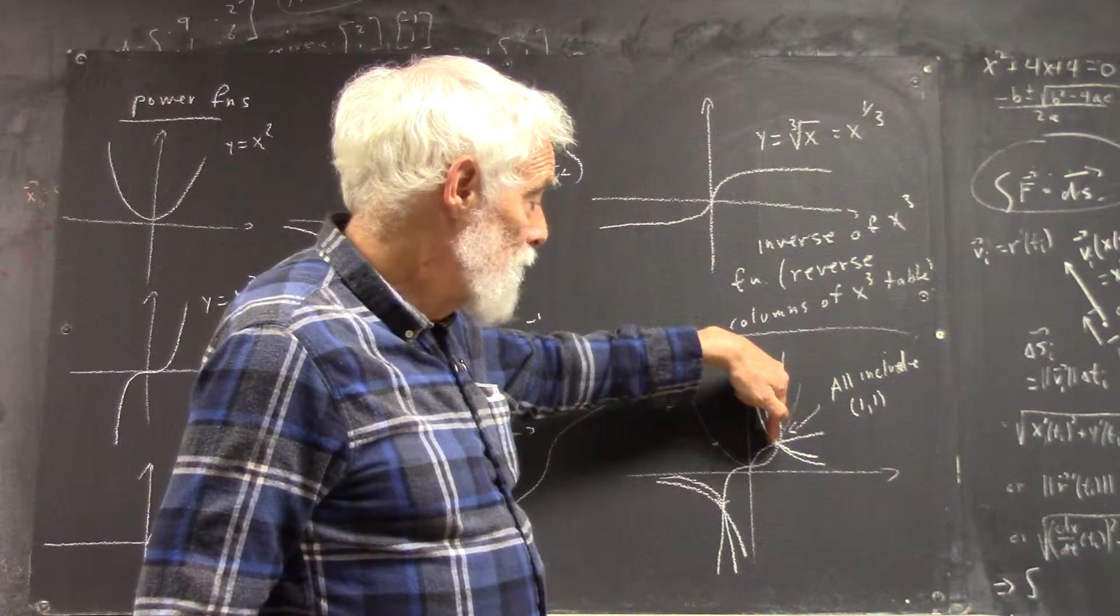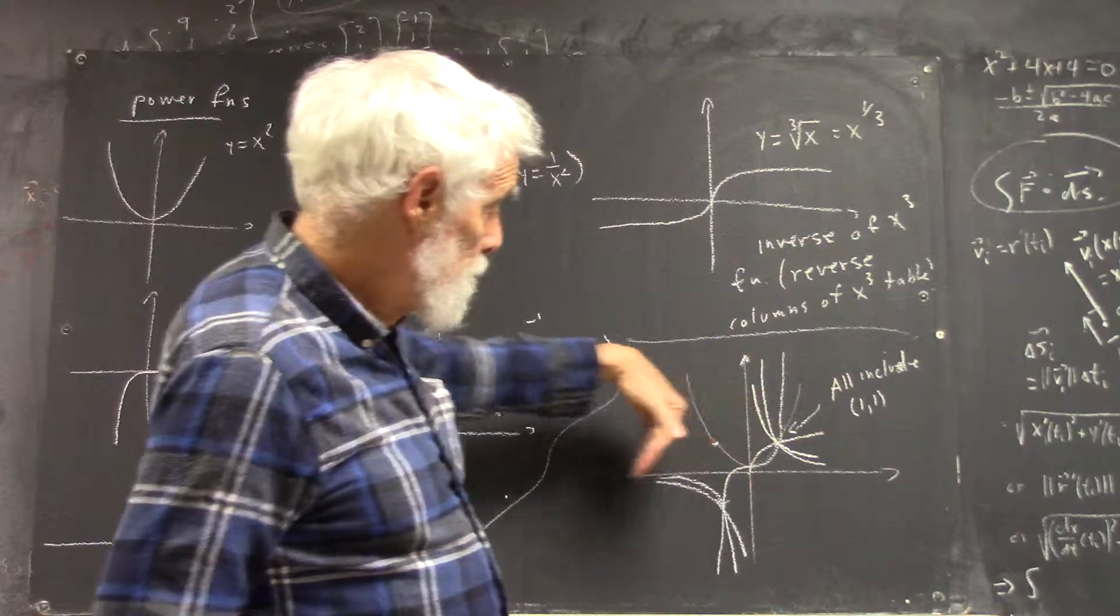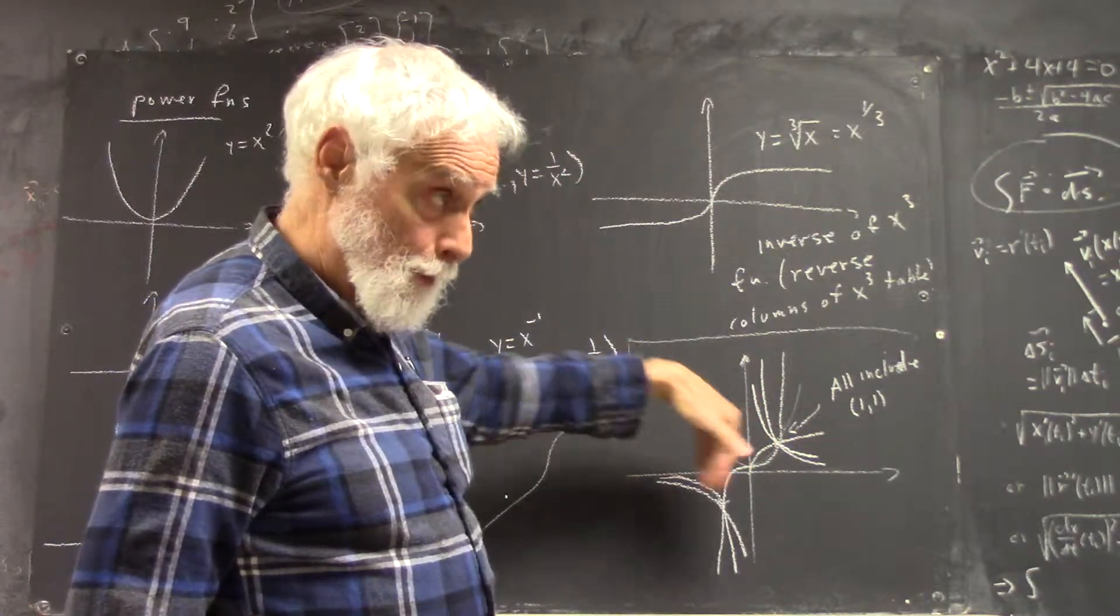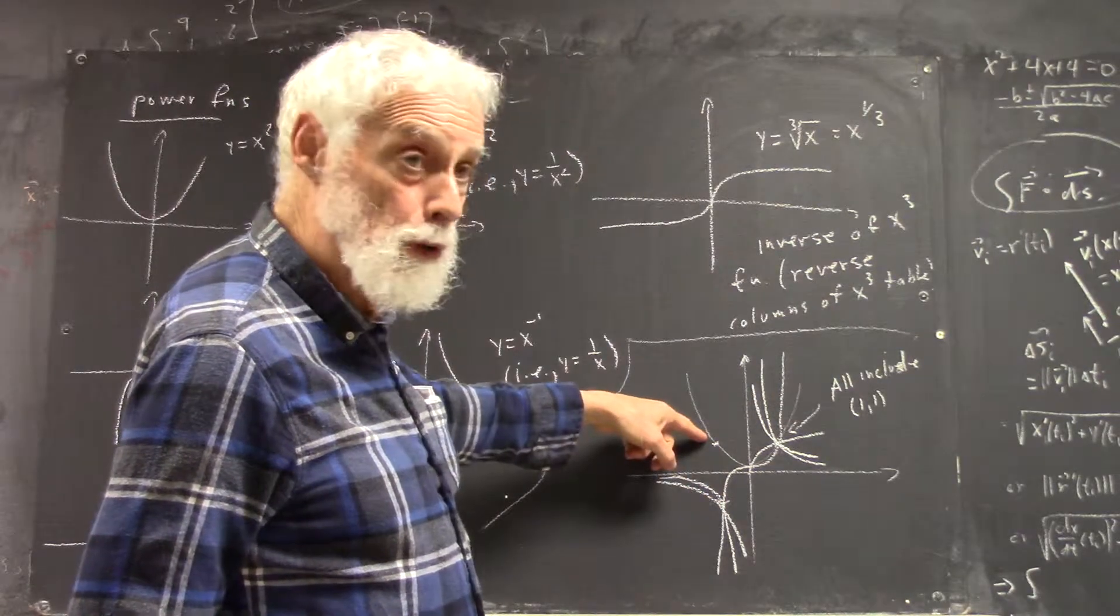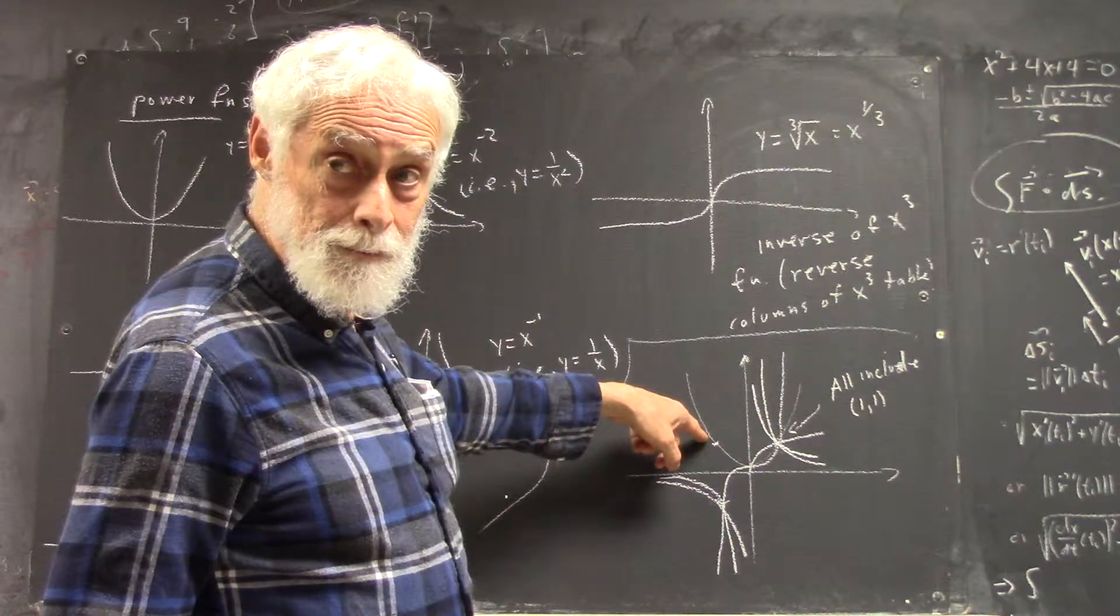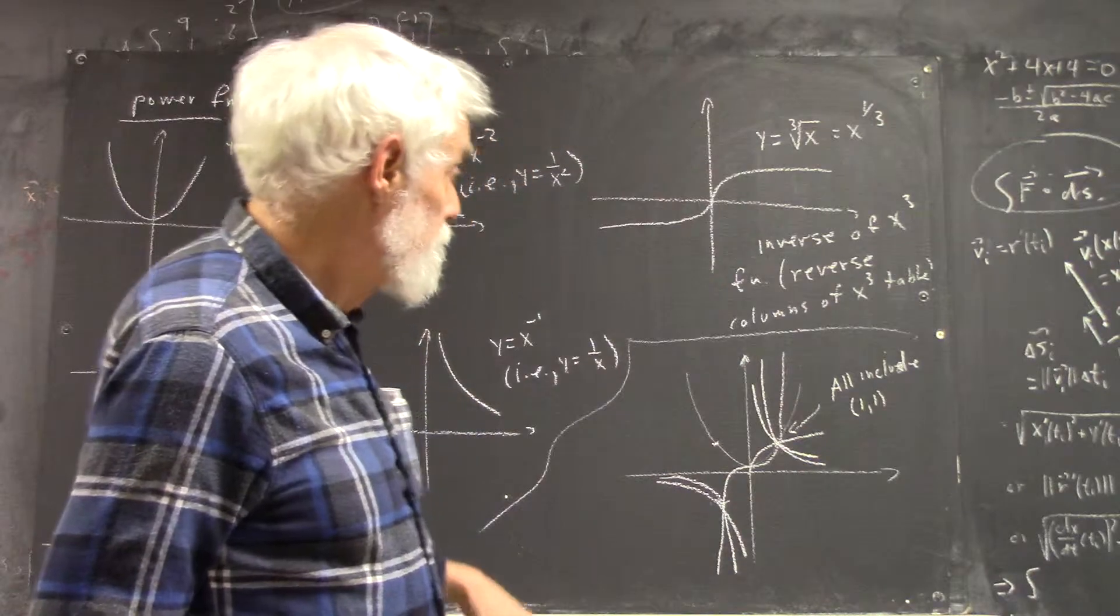And except for the x to the negative one-half, which isn't defined for negative values of x, they would all go through either negative one, negative one, or negative one, one. And there's a pattern to these things.